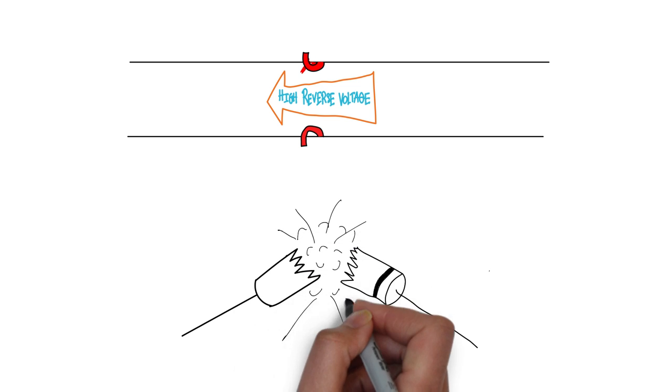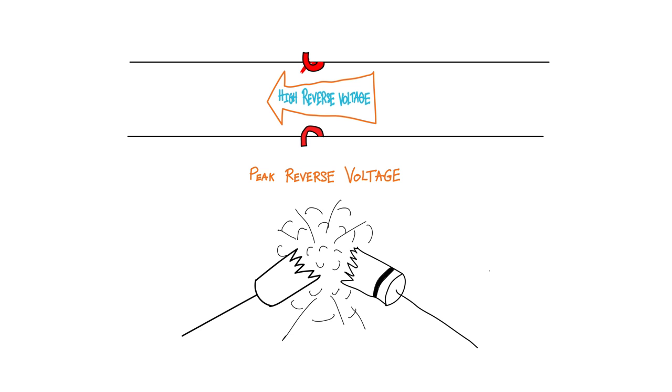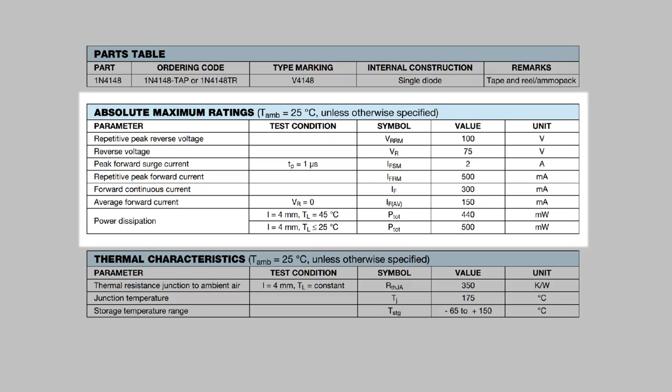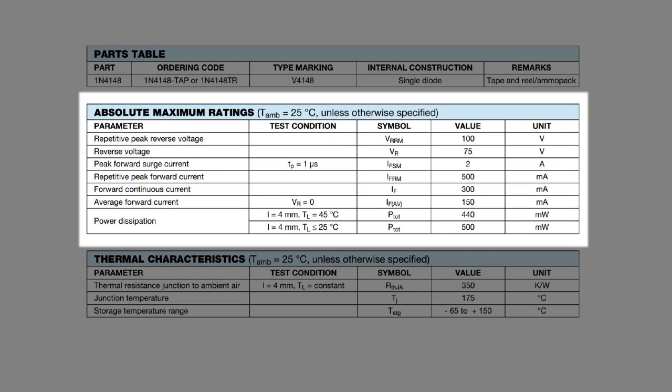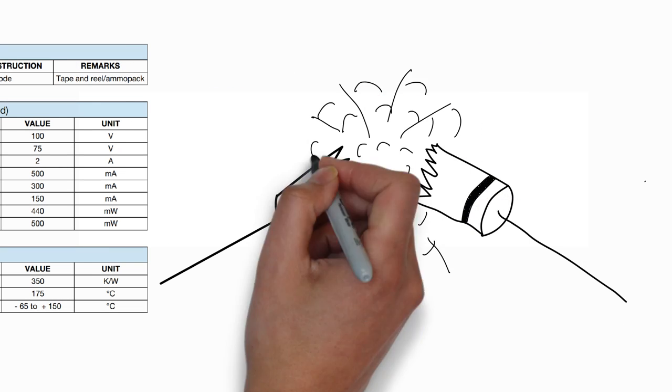You can look in the diode's data sheet for the peak reverse voltage value. That is the maximum reverse bias voltage that the particular diode can withstand. The data sheet also indicates the maximum current ratings. Make sure your diode isn't exposed to more than these ratings, or you will risk permanently damaging the diode.